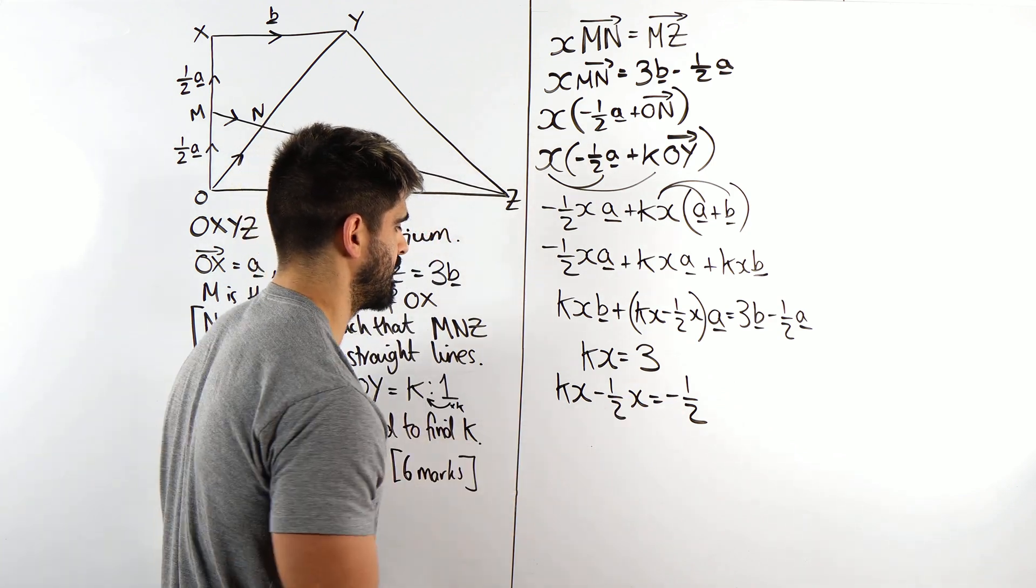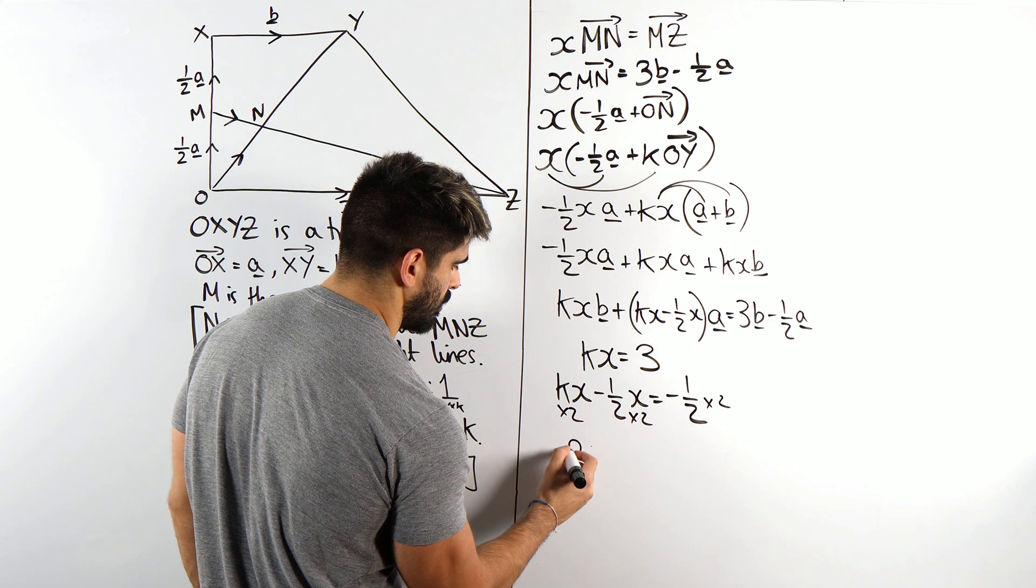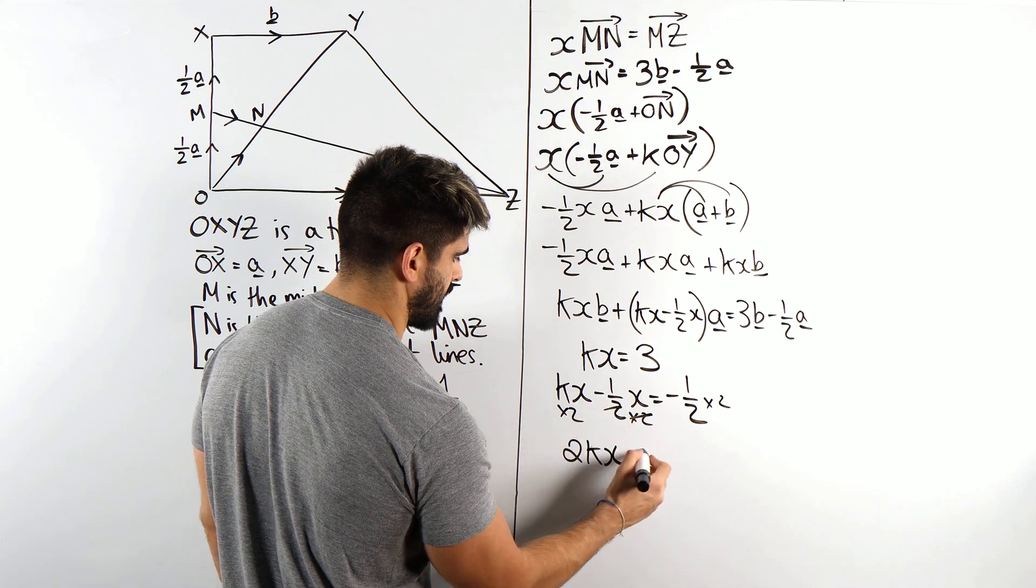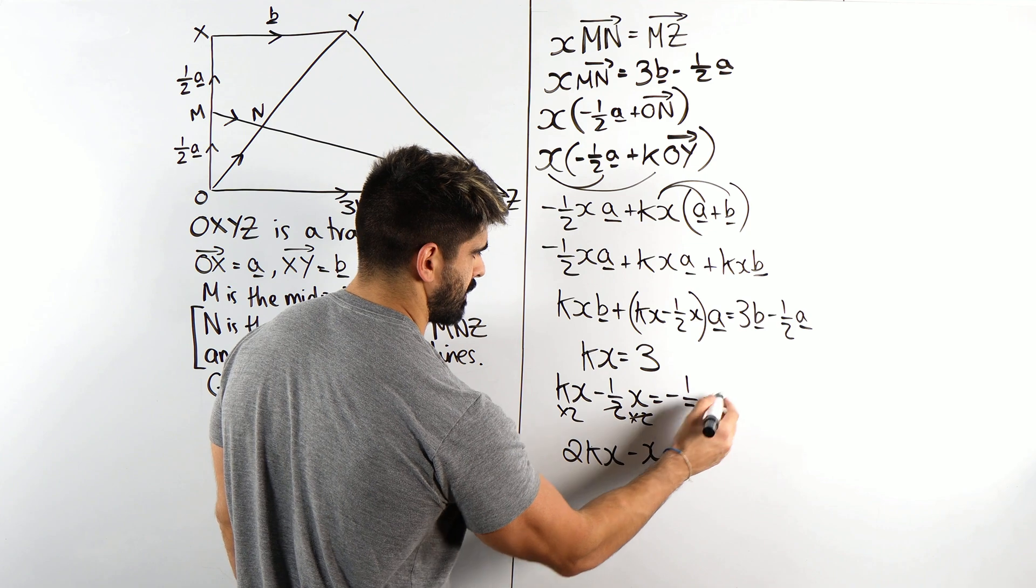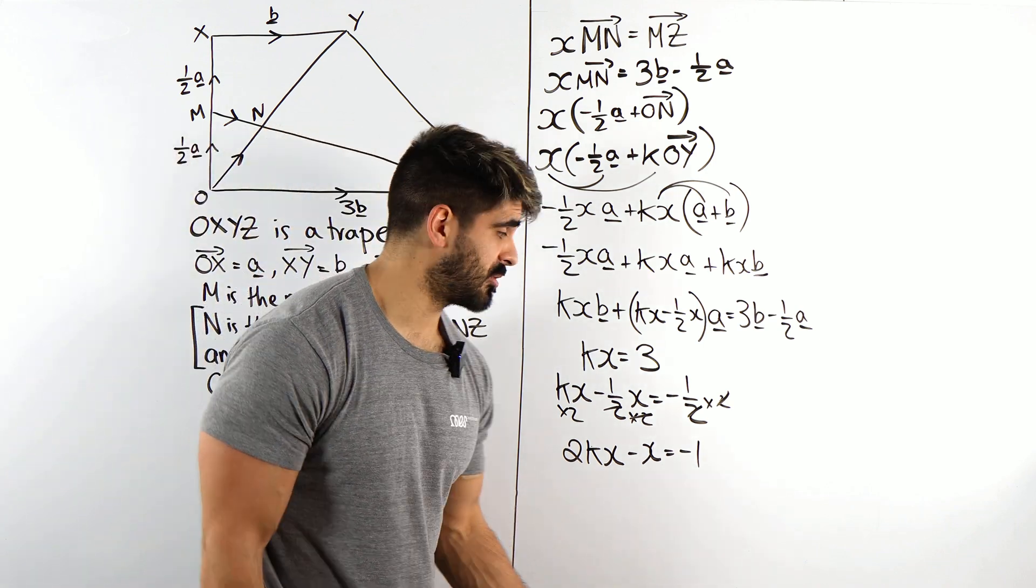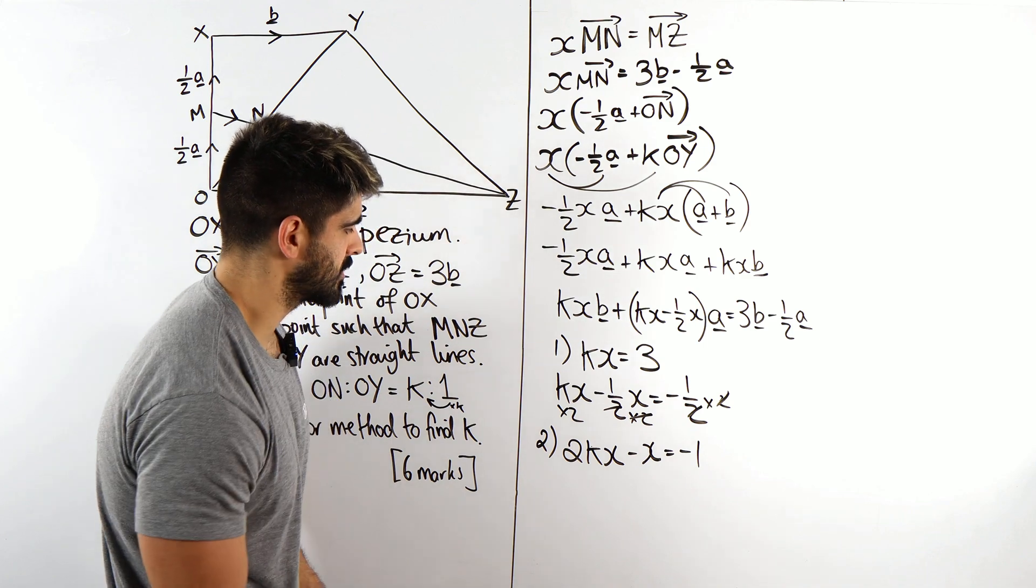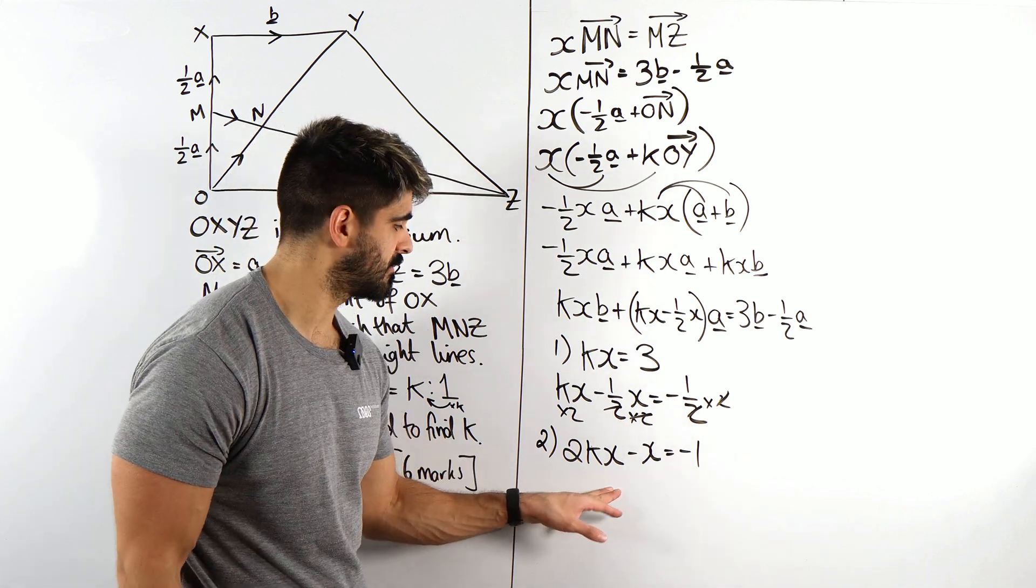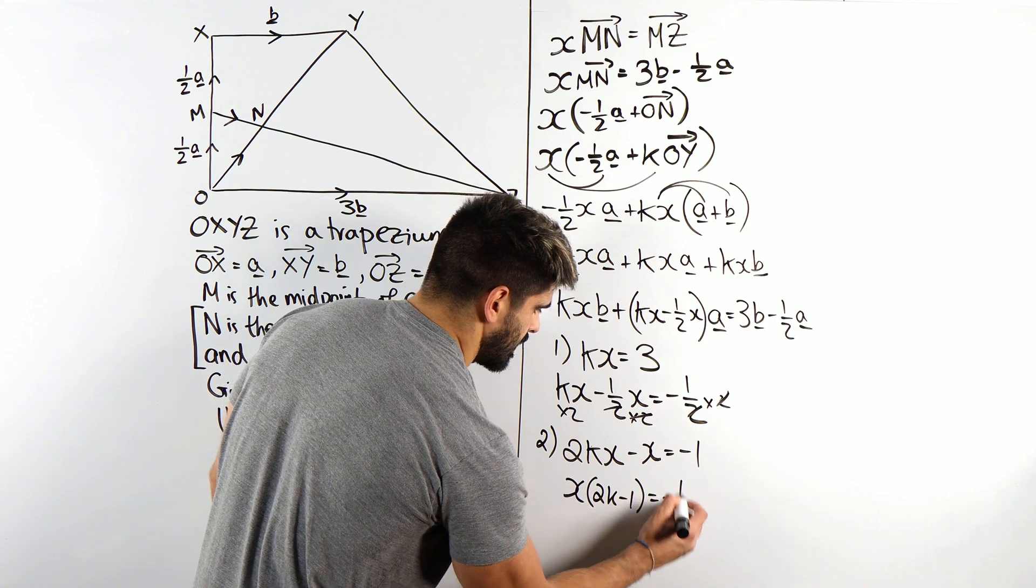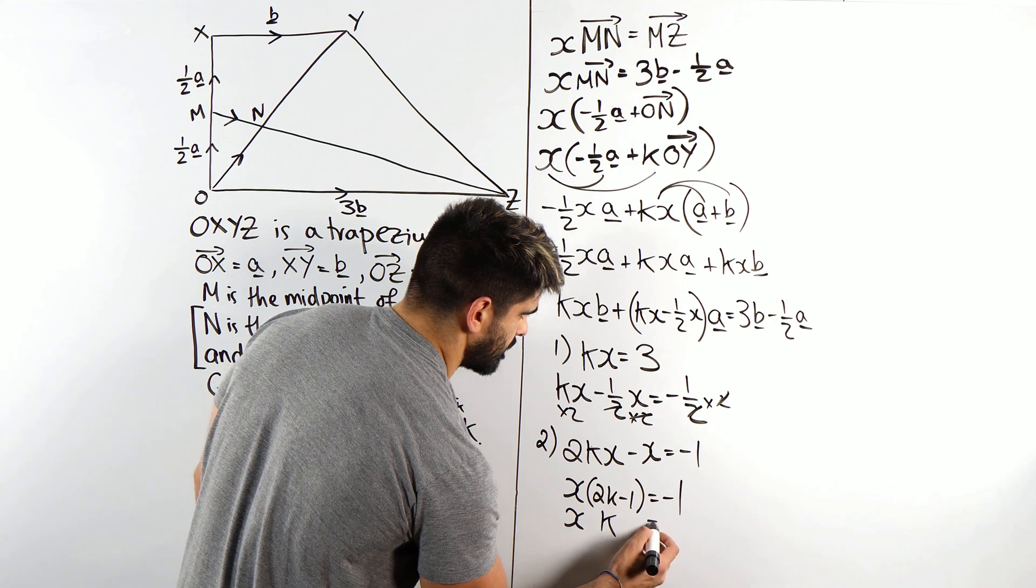And from there, we can double everything to make it much nicer. So timesing everything by 2, we get 2K X minus, this cancels, minus X is minus 1. Now remember, we're not even interested in X. We're trying to work out K. So we have these two equations. We somehow need to eliminate X. Now what I notice here is that X is in two places. I can factorize that out. So I can say X lots of 2K minus 1 is minus 1. And I have KX. I'm just going to write the X first. XK is 3.